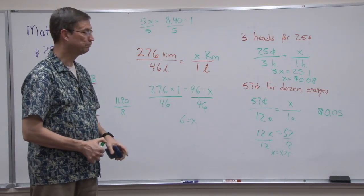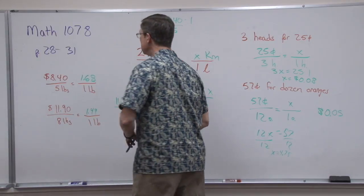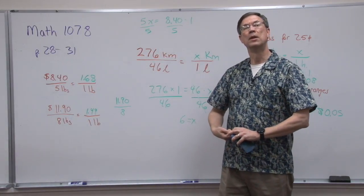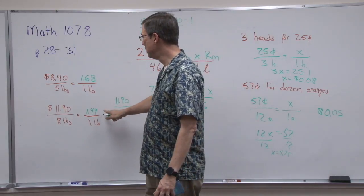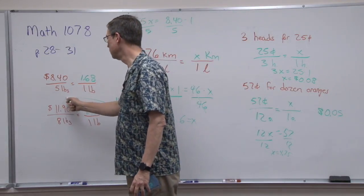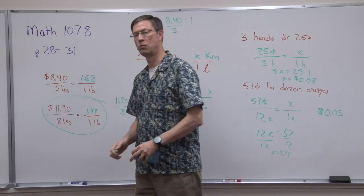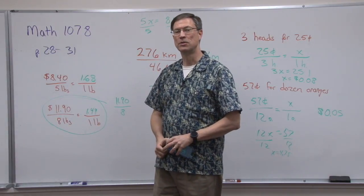Now the pace says circle the one that is the better deal. So of these two, this is the better deal, so you would circle that one.